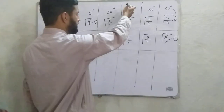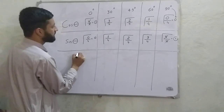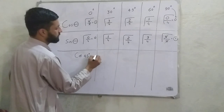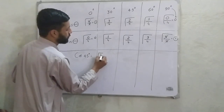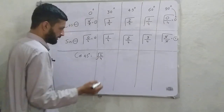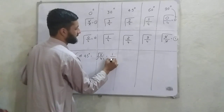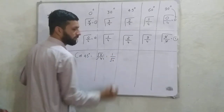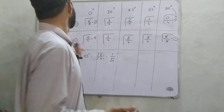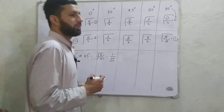Now let us observe cos 45 and sin 45. For cos 45, as we inspect from the table, this is equal to the square root of 2 divided by the square root of 4. Simplifying, cos 45 is equal to 1 over the square root of 2. Similarly, sin 45 is also equal to 1 over the square root of 2.